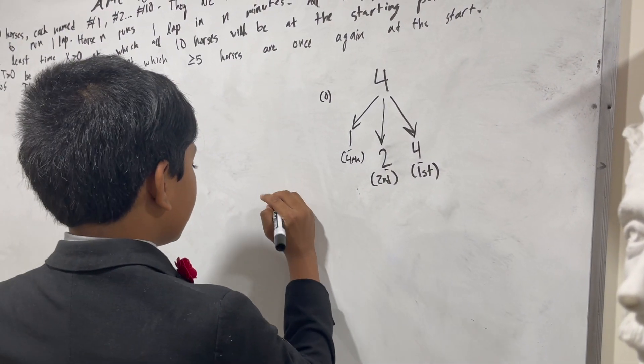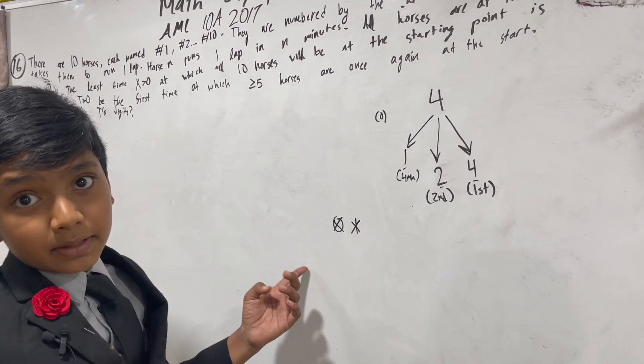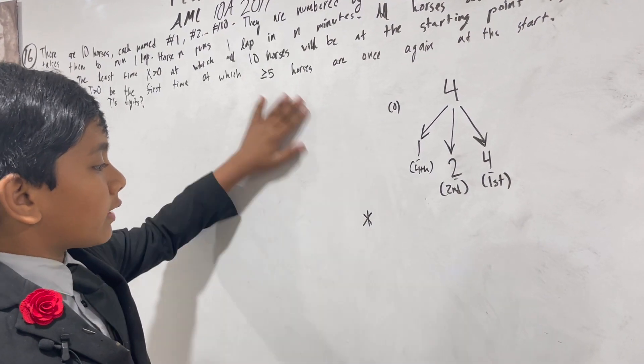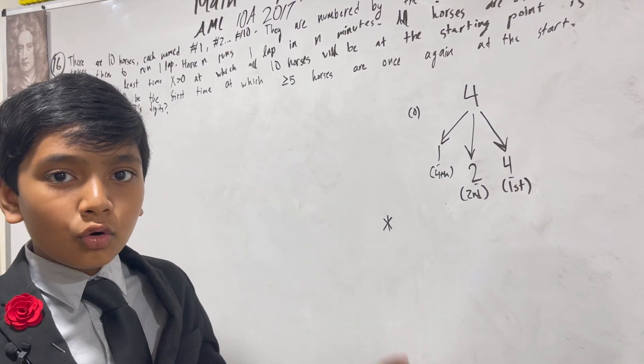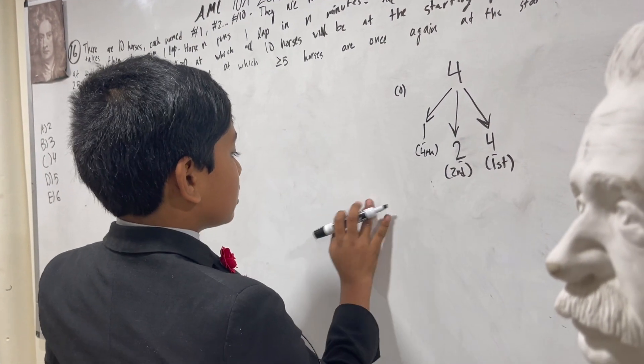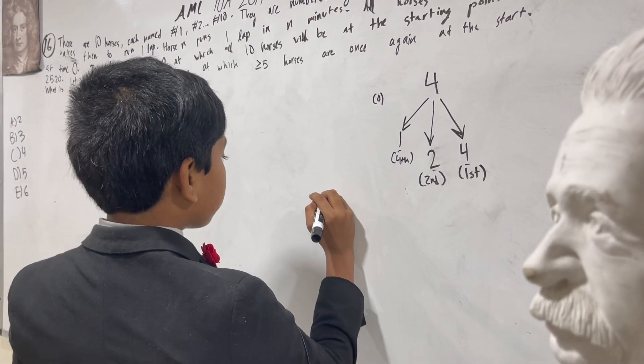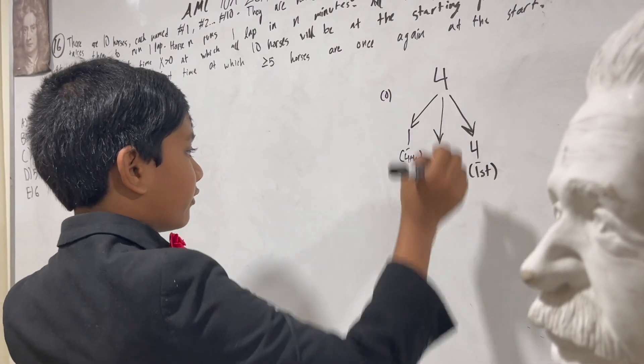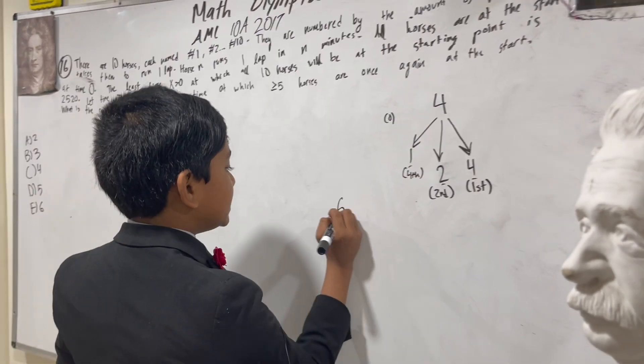Right away, we know that zero and one would not work because there is no horse zero. They were all at the starting point then, but we're looking for T greater than zero. And one wouldn't work because only horse one would be there at that time, because one has only one as its factor. Any of the prime numbers wouldn't work either, so we can skip two and three. We've already examined four, and five is prime. So first, let's examine six.